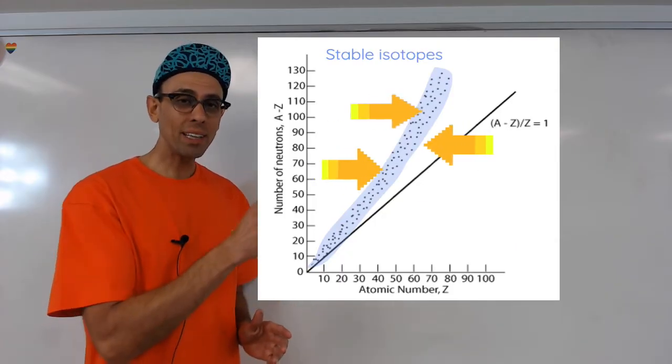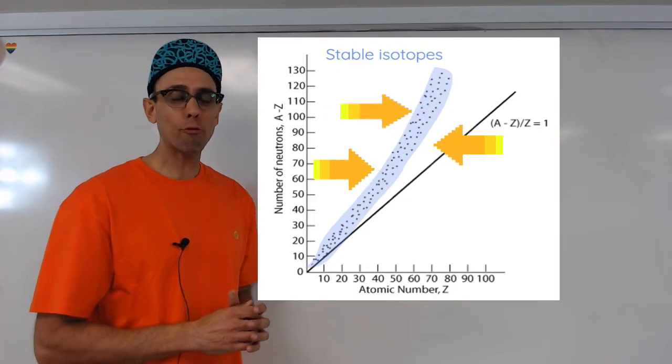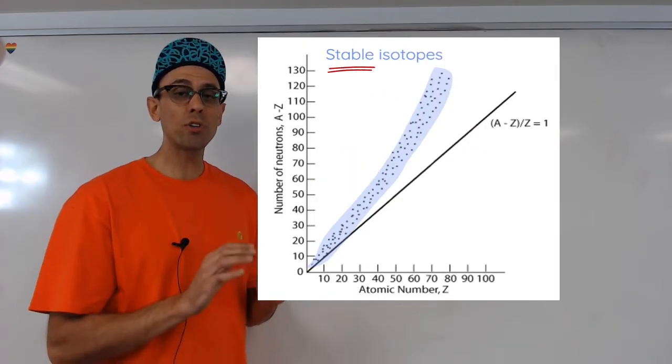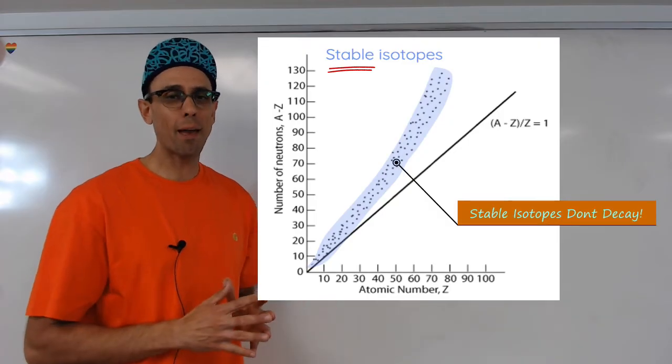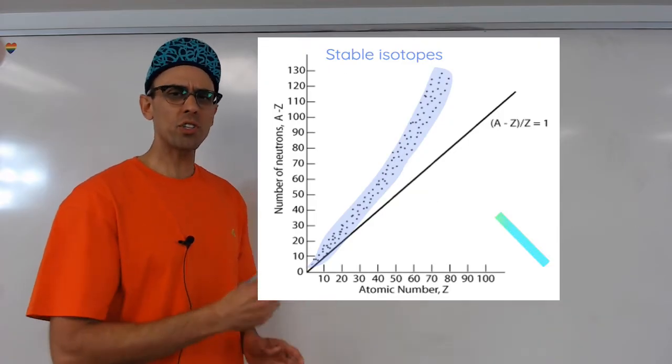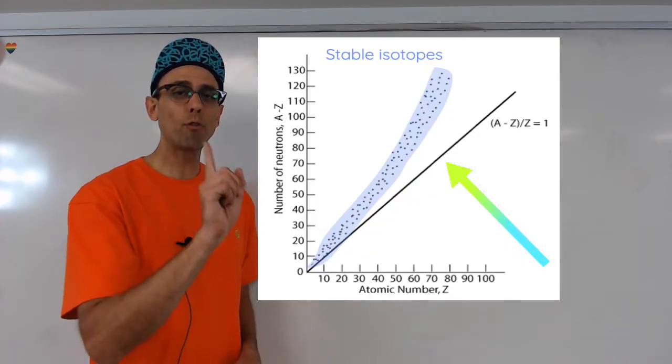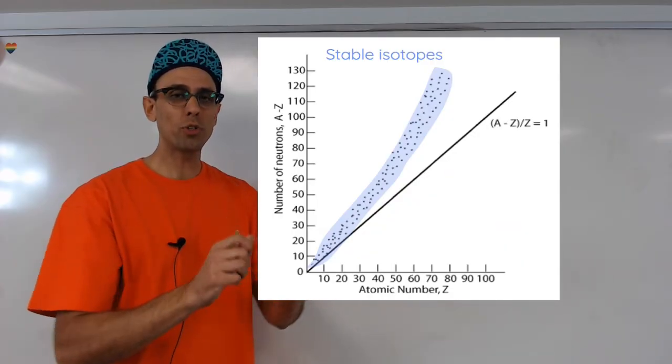Now every dot, every little mark you see on this graph represents an isotope that's stable. In other words, the nucleus is not going to decay.